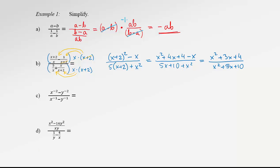We may wonder if it's possible to reduce this fraction by factoring. In the top polynomial, can we find two numbers that multiply to 4 and add to 3? No. In the bottom, can we find two numbers that multiply to 10 and add to 5? Again, no. So those polynomials are not factorable over the integers. Therefore, this is our final answer — we can't reduce it any further.